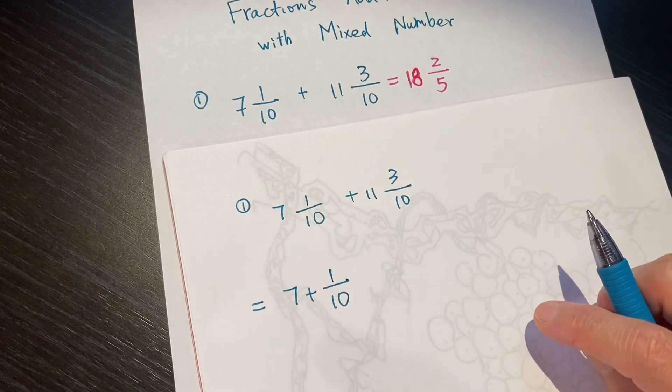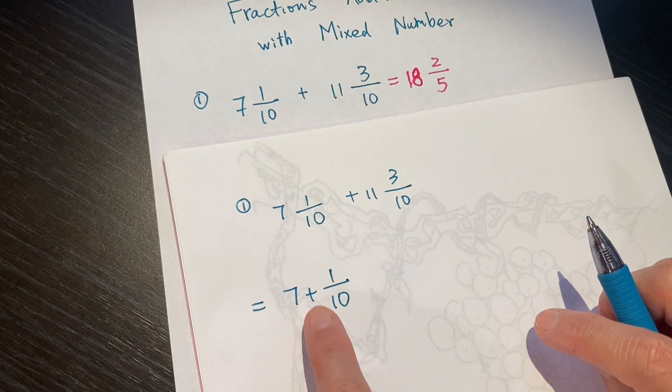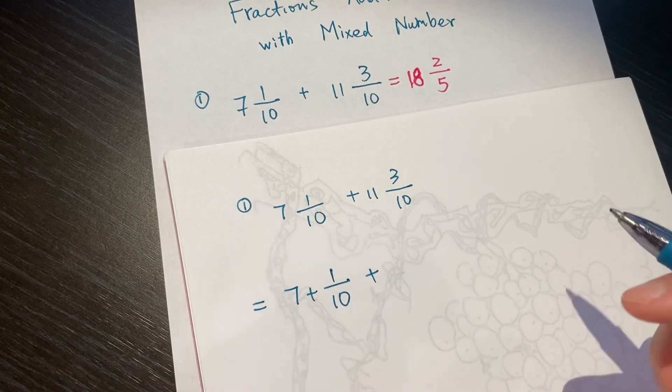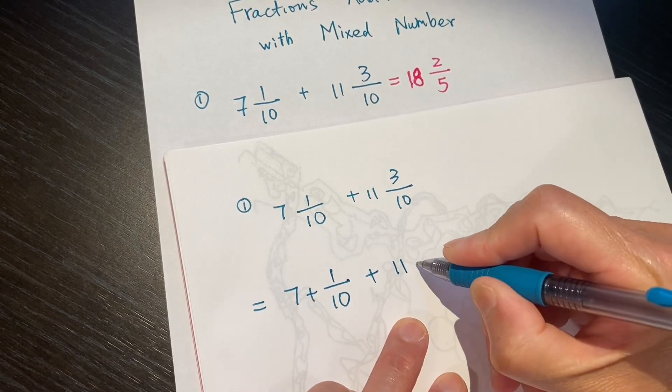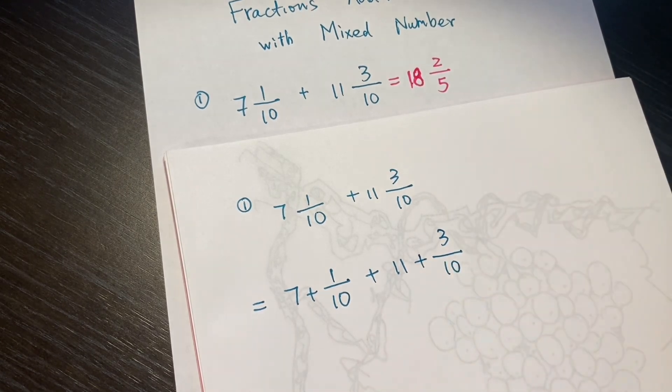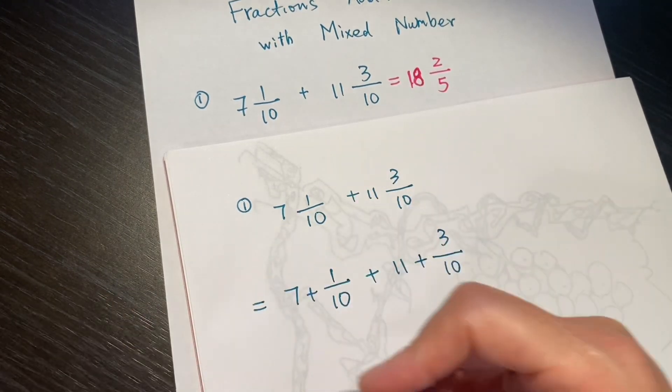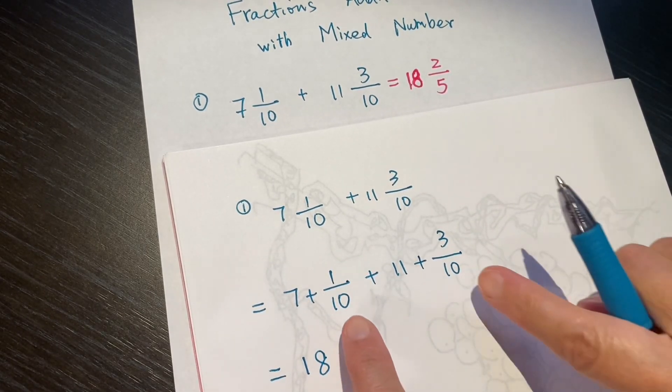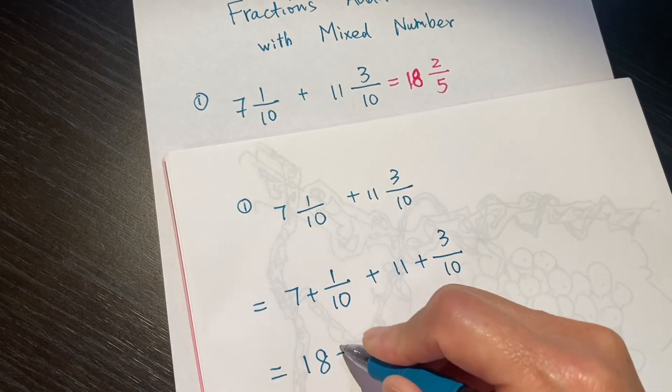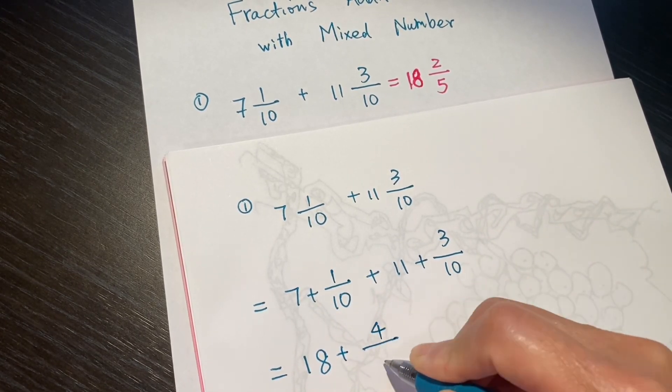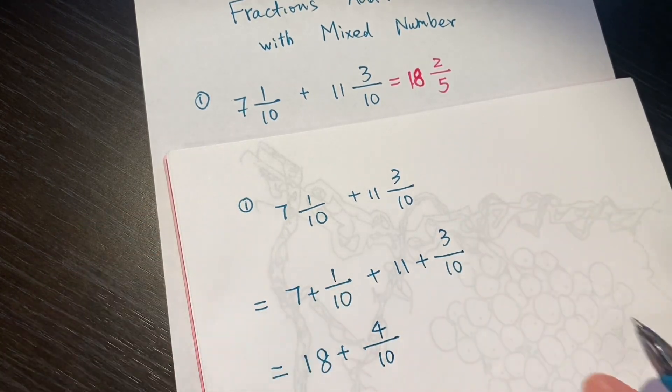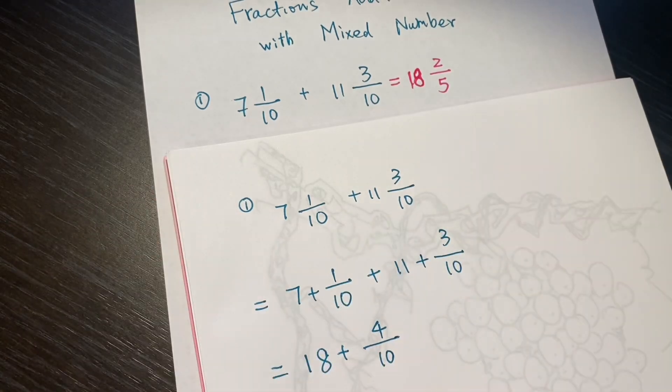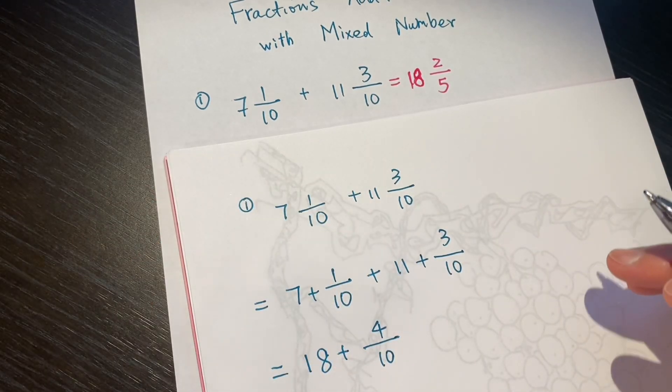7 and 1 over 10 means 7 and 1 over 10. Plus, plus means and. And, 11 and 3 over 10. So, we can add the whole number, which is 18, and then add the fraction, 4 over 10. 1 plus 3 is 4, right? So, it's and. So, it's equivalent. Equivalent.